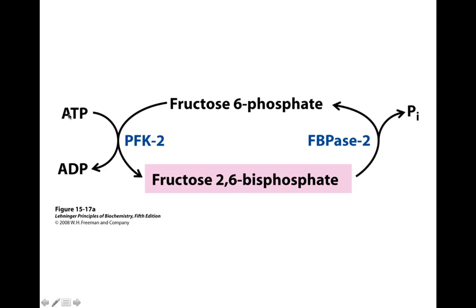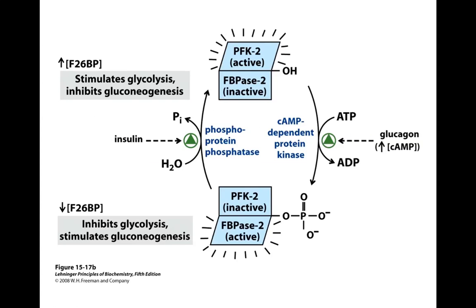The kinase is going to utilize ATP, and a phosphatase is going to remove that inorganic phosphate. What's really cool about these two enzymes is that they're actually contained on the same polypeptide chain. This is one giant subunit, but it has both the PFK kinase activity and the phosphatase activity on the same polypeptide chain. When the kinase is active, it's going to allow us to utilize that activity, or if the phosphatase is active, it's going to utilize that activity.